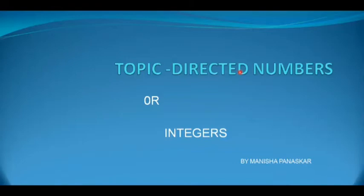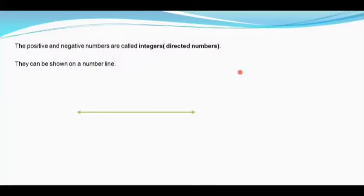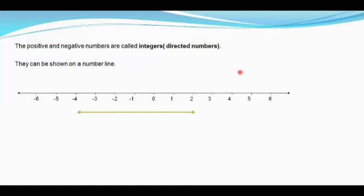Integers are positive and negative numbers. When we go to cold regions, we find the temperature decreasing — that is how we need to know about negative numbers. Integers can be shown on the number line.